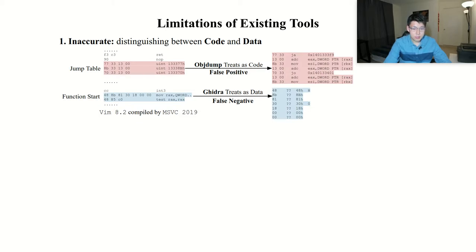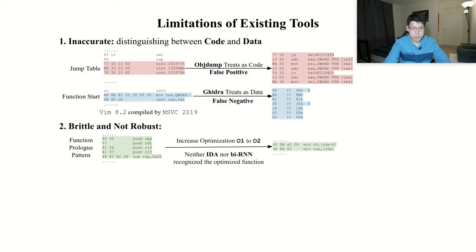The existing approaches also construct a large set of heuristics for disassembly. However, these heuristics are often brittle. For example, consider another byte piece extracted from the same program, which exemplifies a typical function prologue pattern. We find that when we increase the compiler optimization, the function prologue pattern disappears. As a result, both the non-ML-based tool like IDA or ML-based tool like bidirectional RNN fail to recognize the optimized function.